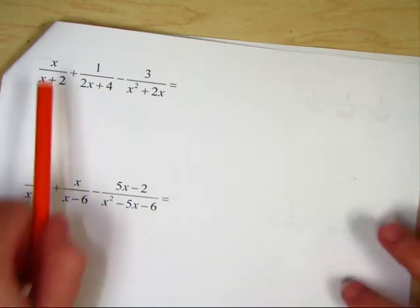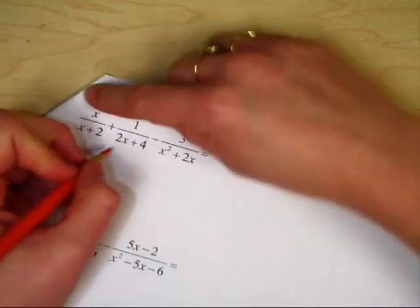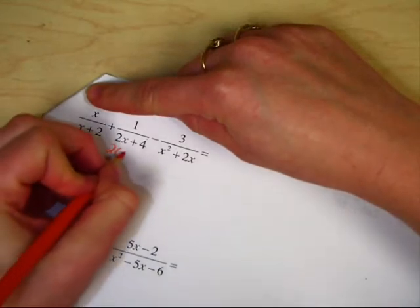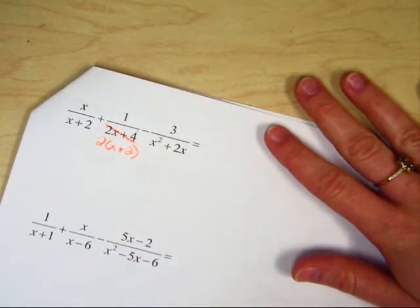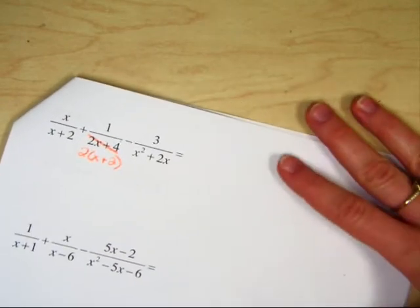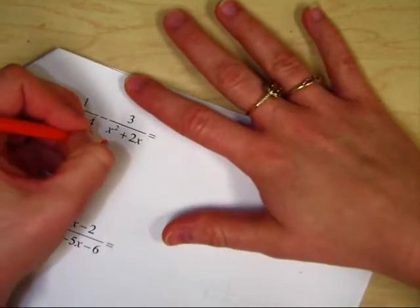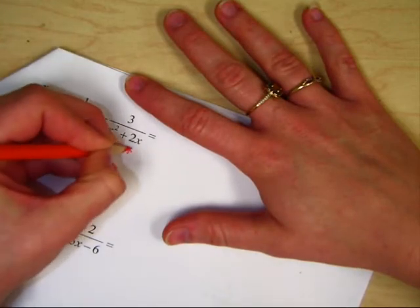Factor what can factor. This cannot factor. This can factor into 2 times x plus 2. You can pull out a GCF. If you don't pull out your GCF, you're really going to have a hard time with this problem. On this one, you can pull out an x, so you get x plus 2.